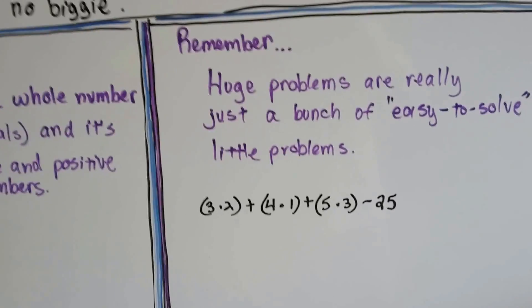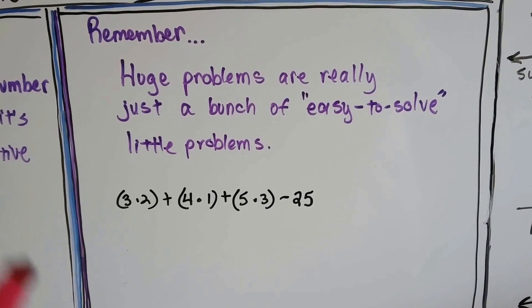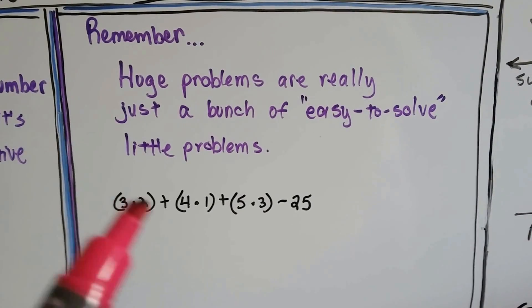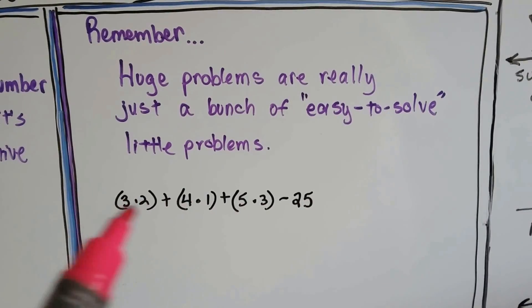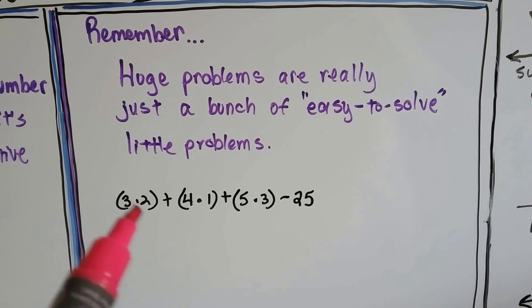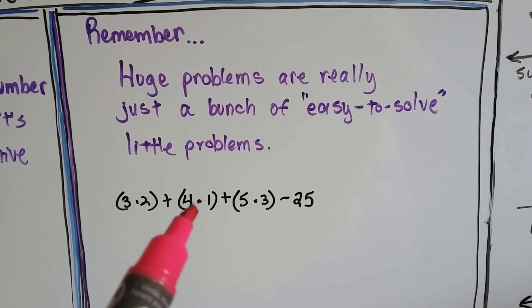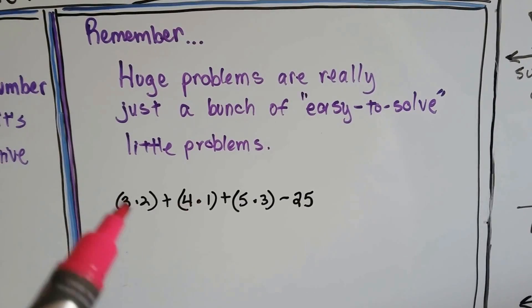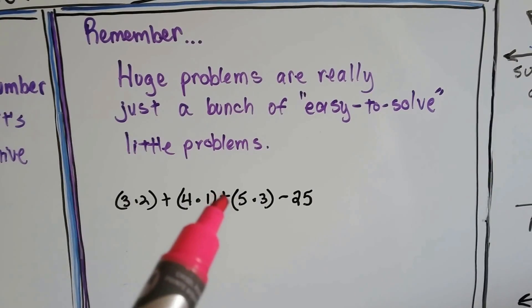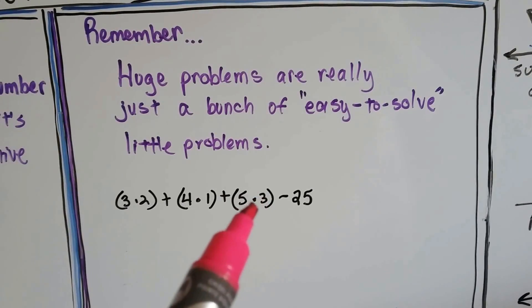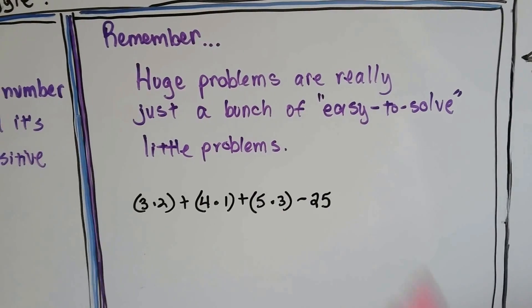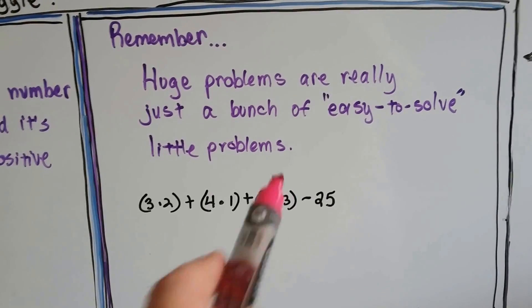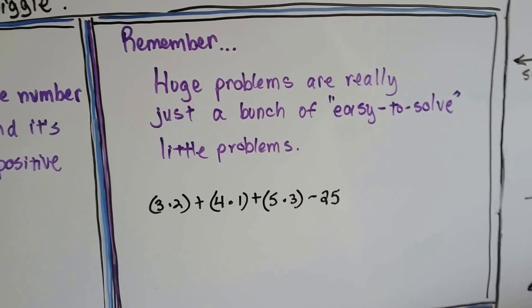I want you to remember that huge problems are really just a bunch of easy to solve little problems. Whether it's in math or it's in life. If you see this, this is really very easy. Look at 3 times 2 is 6 plus 4 times 1 is 4. 6 plus 4 is 10. And you add 5 times 3 is 15 to it. 10 plus 15 is 25. You take away 25 and it's really 0. So that whole thing was just 0.